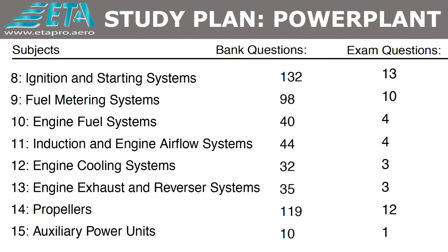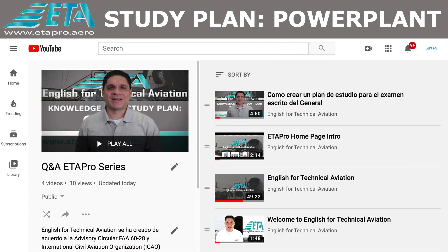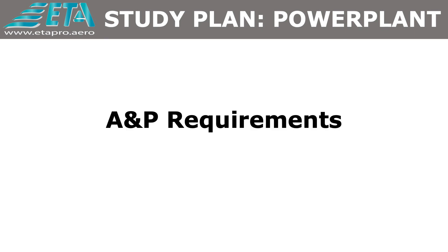Recuerden que el plan de estudio que les propone ETA Pro consiste en dedicar mayor tiempo de preparación a los temas con el mayor número de preguntas en el examen, los cuales les brindarán una probabilidad más alta de pasar con excelentes resultados. Pero nunca olviden que todos los temas se deben estudiar. Esperamos que los 3 videos de esta serie hayan sido de mucha ayuda para prepararse para la licencia A&P. En nuestro próximo video explicaremos los pasos que se requieren para obtener esta importante licencia.